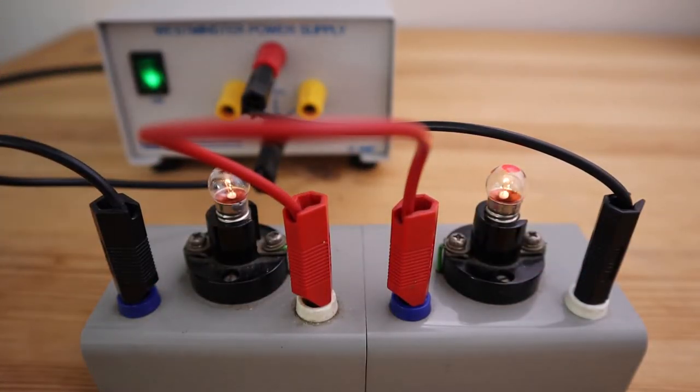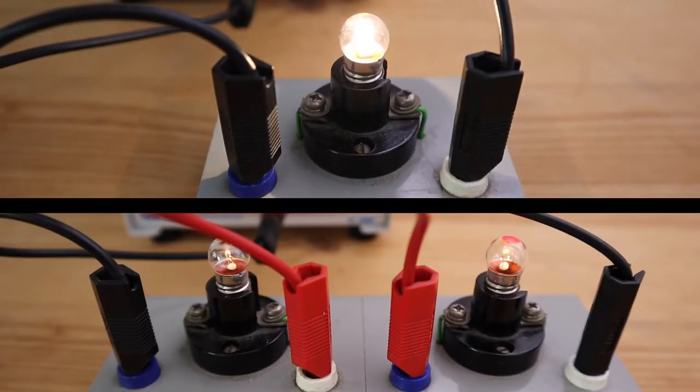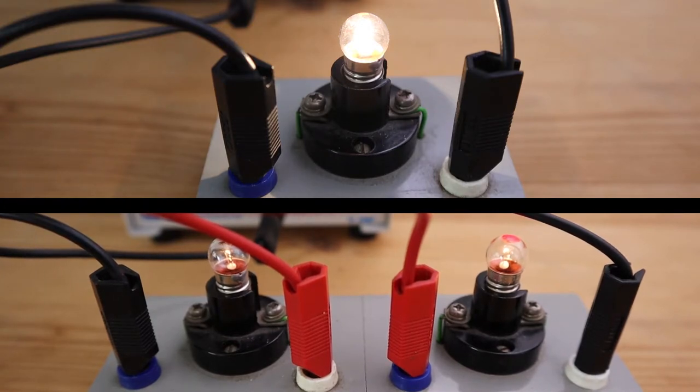Comparing the circuits side by side, what do you notice? When the second bulb is added, the bulbs shine dimmer compared to when there is only one single bulb.